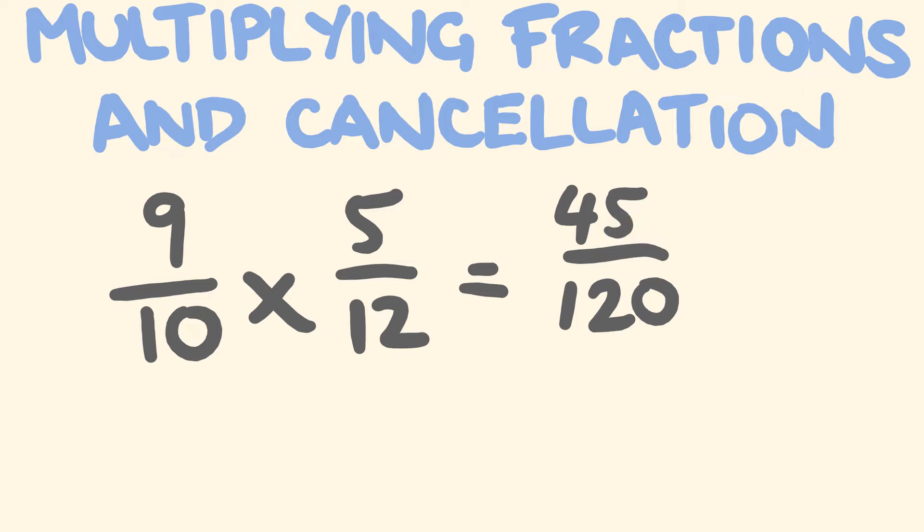But what we do with cancellation is we find common factors as we go. I'll show you what this means. So for instance 9 over 10 times 5 over 12. We're going to look at any of the numerators here and compare them to the denominators and is there any common factors that go into both. So we look at 9 for instance here and 12. They have a common factor that goes into both of them.